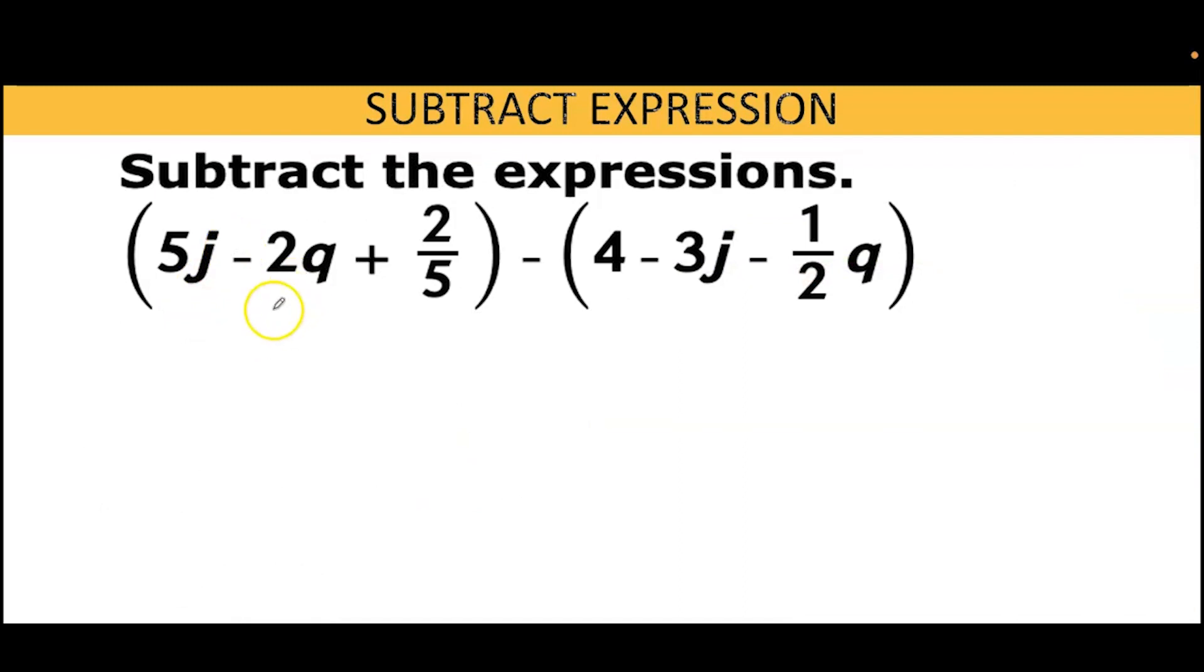Subtract the expressions: (5j minus 2q plus 2/5) minus (4 minus 3j minus 1/2 q). First I'm going to put my invisible ones so you can see them. Then I'm going to use the distributive property to expand these parentheses.